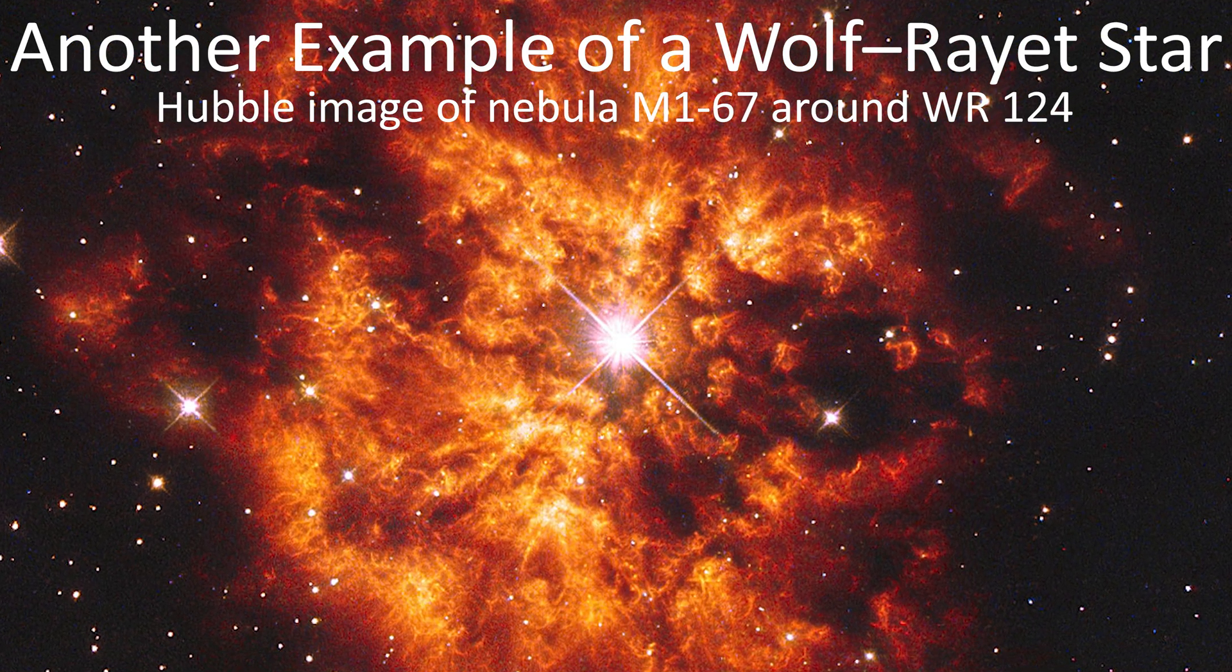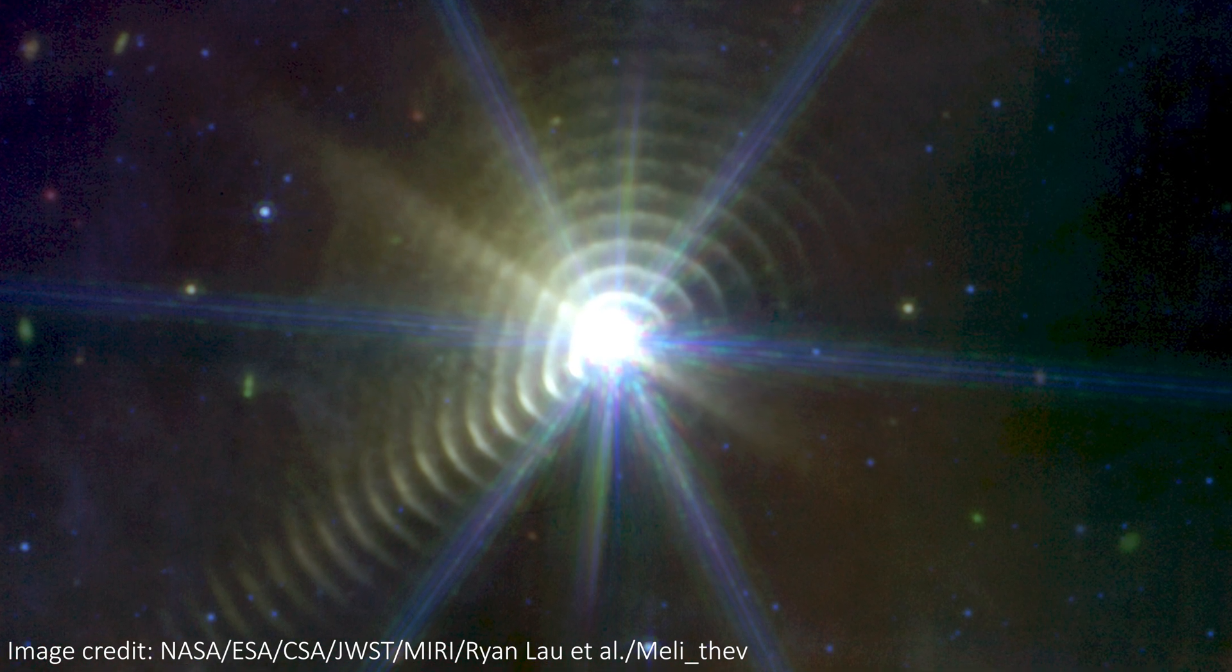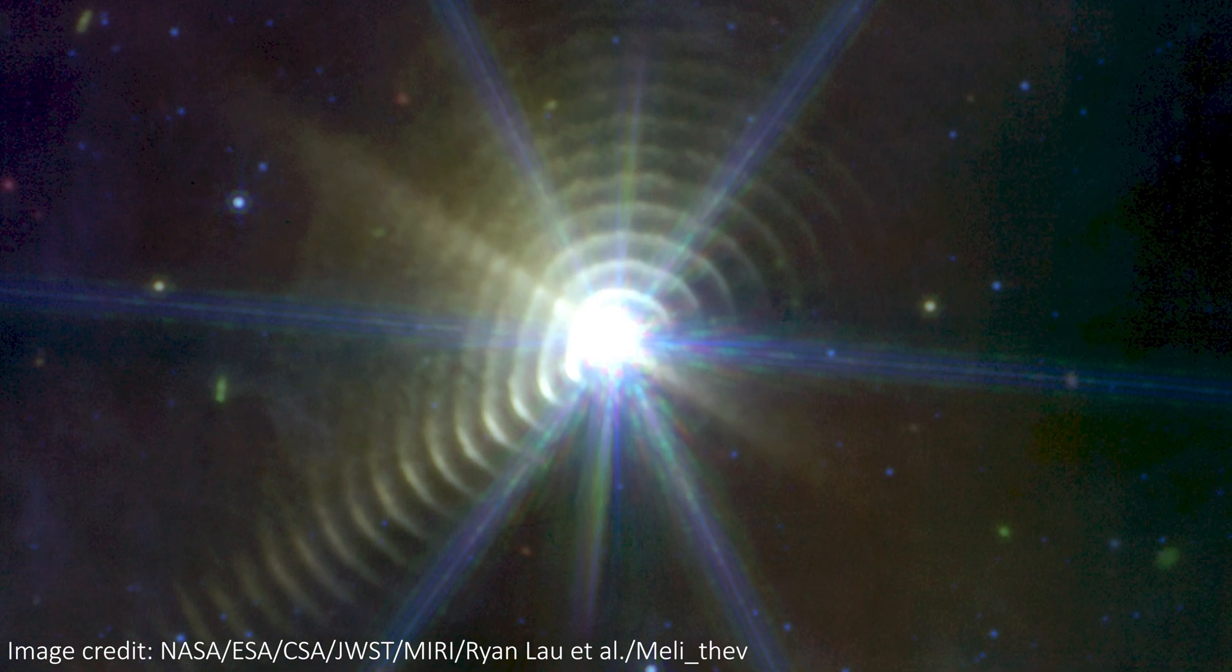We know of only a few hundred binary pairs of stars that contain a Wolf-Rayet star, and this is the only example we know of in which the orbiting stars are both WR stars. These stellar objects have lost all of their outer layers of hydrogen, leaving behind hot cores.